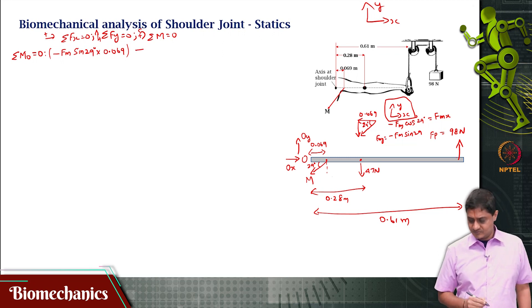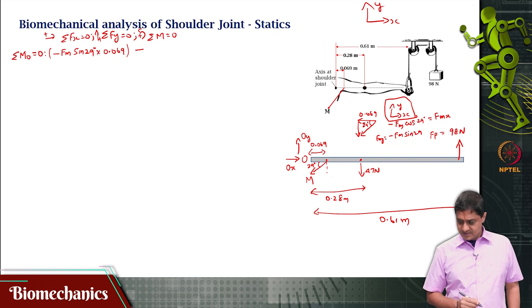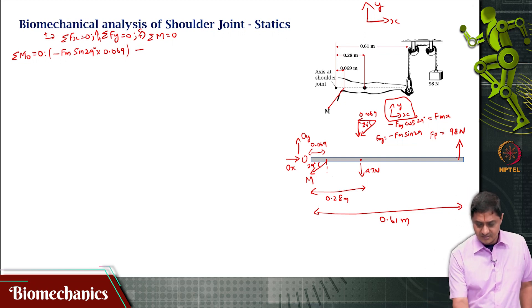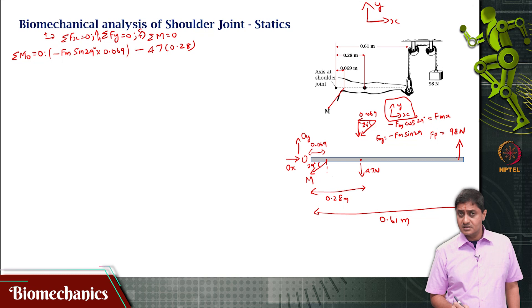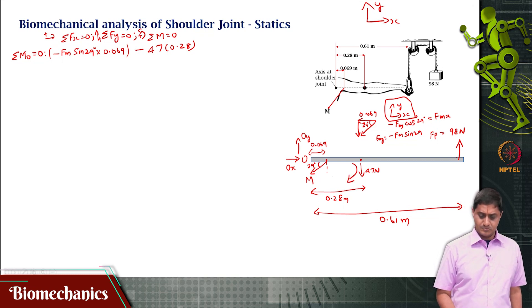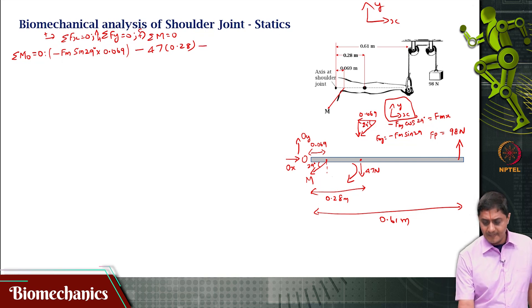Minus, anything else, of course, there is the 47 newton, minus 47 times, that distance is 0.28 and that will also cause a clockwise moment. Plus 0.98 times 0.61, why plus?